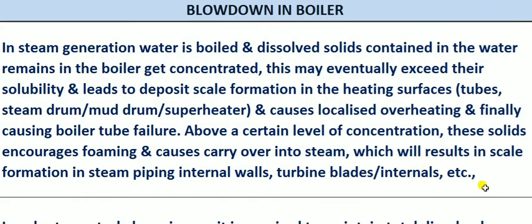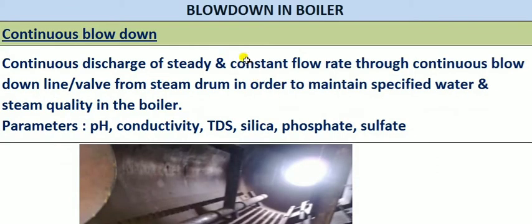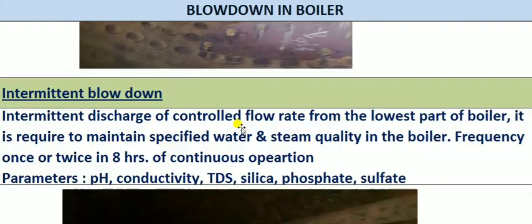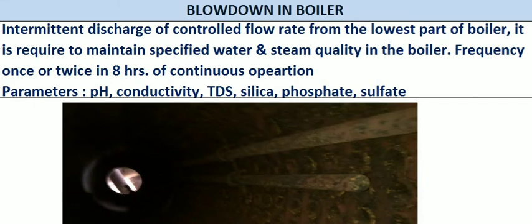So now it should be clear. We know the importance of blowdown operations — to maintain water quality as per standards, to avoid scale deposition in boiler tubes and outlet pipelines. It should be optimum to avoid excessive energy losses. The two types are: continuous blowdown, which is kept continuously open at a certain valve opening from the steam drum; and intermittent blowdown, taken from the lower part of the boiler — the mud drum — operated for a certain time, typically two to five minutes, then closed.